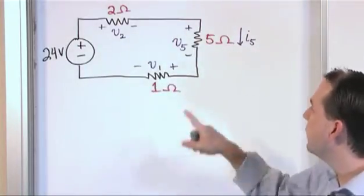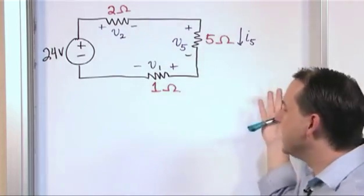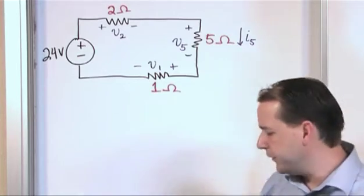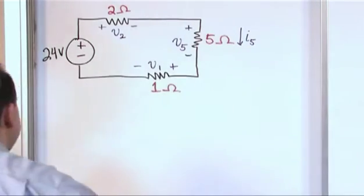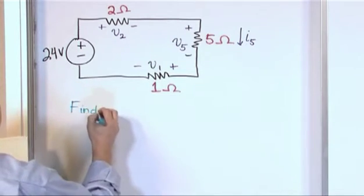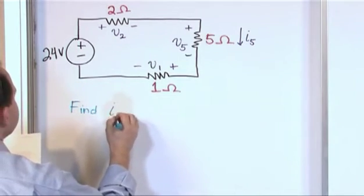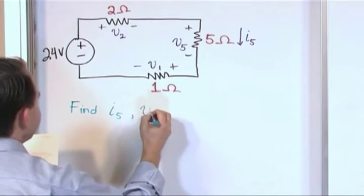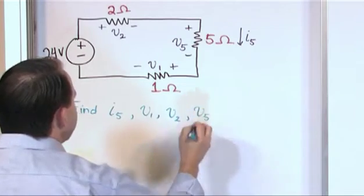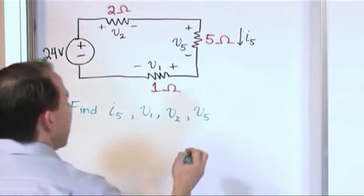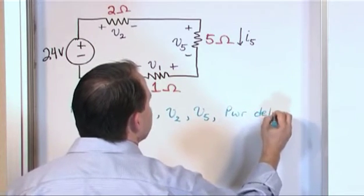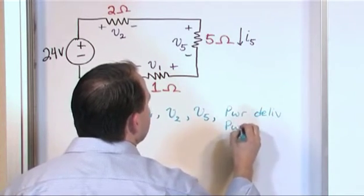You have these three voltages here, you know the current going through here. Nothing's really given to you other than the value of the resistors and the voltage source here. And what we're asked to find in this problem here is, I'll just write it here: Find. We want to find the value of I sub 5, we want to know the value of V1, we want to know the value of V2, we want to know the value of V5.